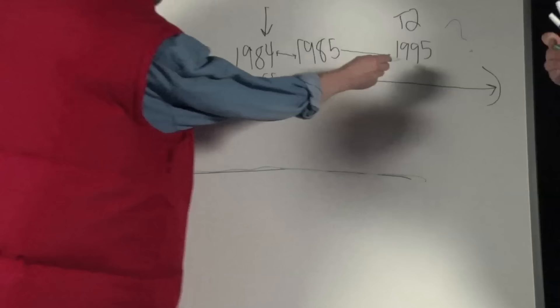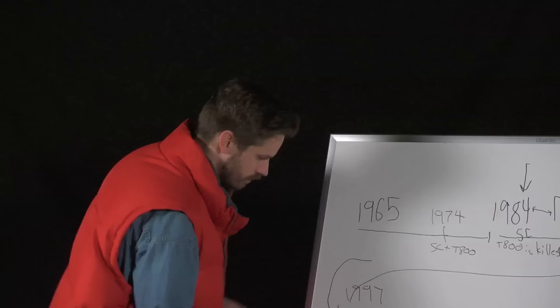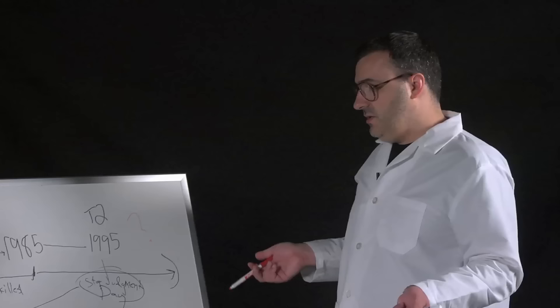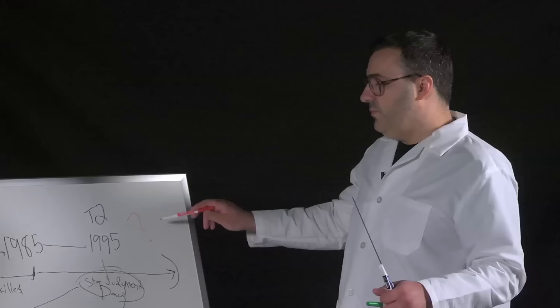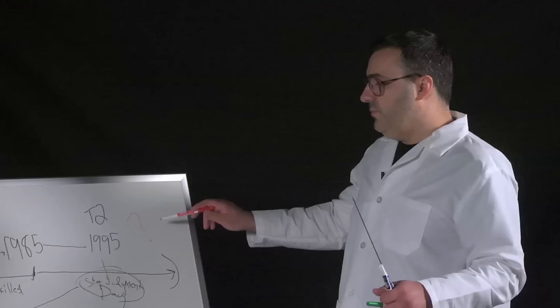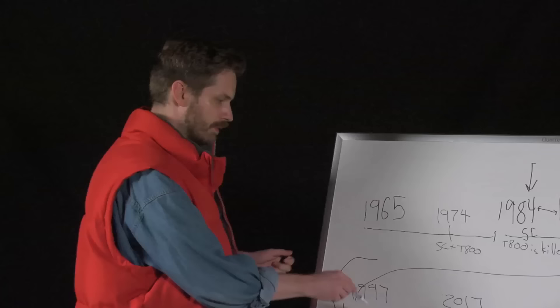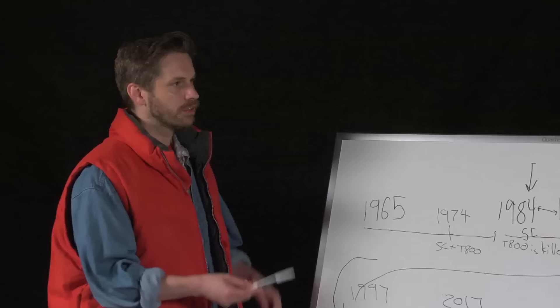So, 1997 is Judgment Day. Yeah, or the original Judgment Day, but now everything's changed. But then, 1995 is when they stopped Judgment Day, right? Right, yes. And Judgment Day gets pushed back or pushed forward, whichever way you want to look at it, to 2017. One of the key factors is that John Connor becomes a digital robot.